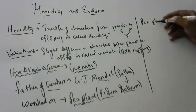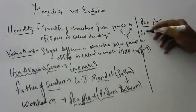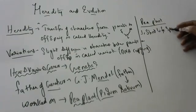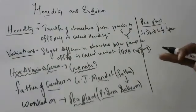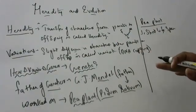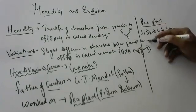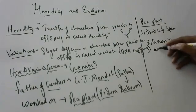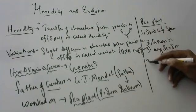Why did he select only the Pea plant? This is a very important question. Because the Pea plant has a short life span — it will grow in one or two weeks, or fifteen days to one month, and you can complete the harvest. It won't take six months or one year. You can grow it fast. Also, it can grow in any season — you don't have to wait for summer, winter, or spring.